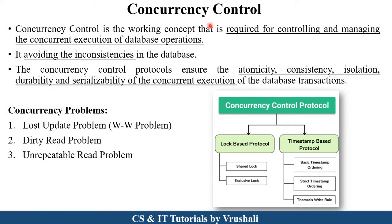The first point is: what exactly is concurrency and concurrency control? There is only one database, so multiple users and multiple transactions perform at the same time on the same data item in the database — this is called concurrency. Due to multiple transactions performing at the same time, some problems occur, like lost update problem, dirty read problem, and unrepeatable read problem. We already discussed all these concurrency problems in the previous video (part one). So to solve all these concurrency problems, we require a concurrency control protocol.